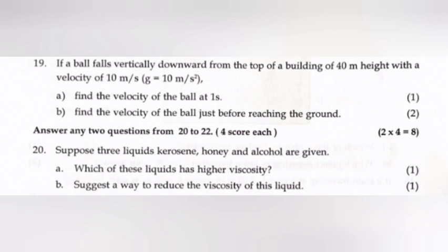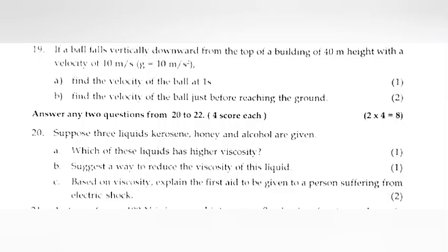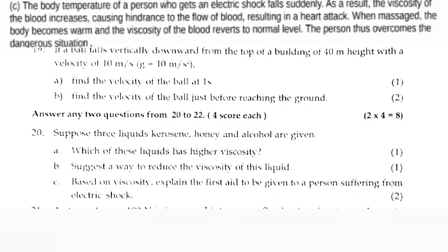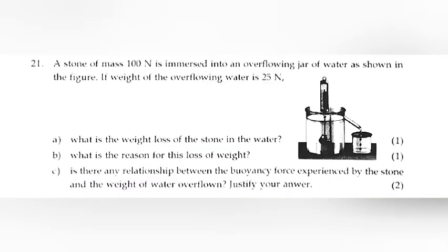Question 20: Suppose three liquids - kerosene, honey, and alcohol - are given. (a) Which of these liquids has higher viscosity? Answer: honey. (b) Suggest a way to reduce the viscosity of this liquid. Answer: heat it. (c) Based on viscosity, explain the first aid to be given to a person suffering from electric shock. Answer: The body temperature of a person who gets an electric shock falls suddenly. As a result, the viscosity of blood increases, causing hindrance to blood flow, resulting in heart attack. When massaging, the body becomes warm and the viscosity of blood reverts to normal level, helping the person overcome the dangerous situation.